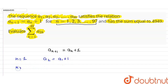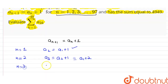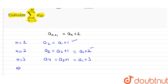If we put n equal to 2, we get a3 = a2 + 1, and substituting a2 gives a3 = a1 + 2. If we put n equal to 3, a4 = a3 + 1 = a1 + 3. Similarly, putting n equal to 4 gives a5 = a4 + 1 = a1 + 4.